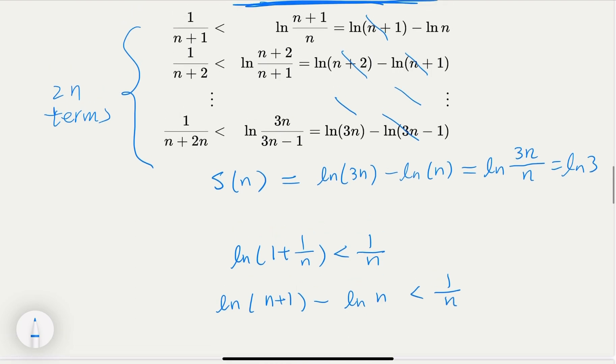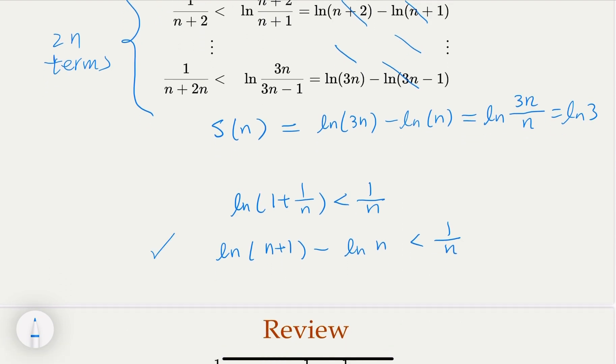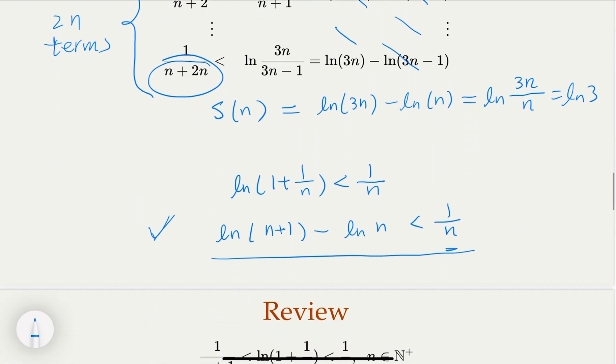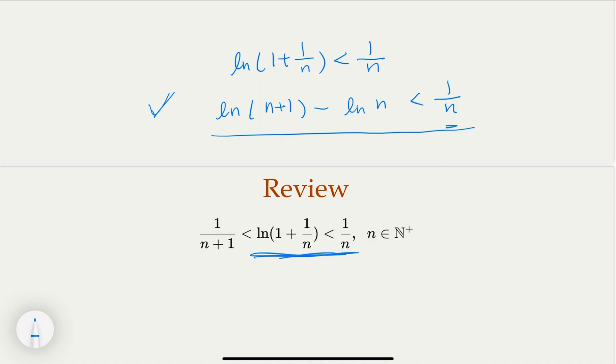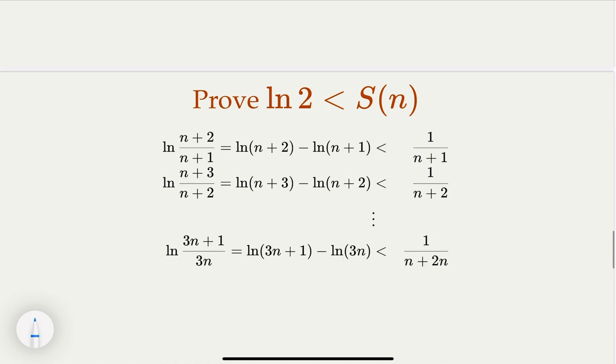But notice that the first term we need is n plus 1. So we're going to use this term, but we're going to start with n plus 1 here up to n plus 2n. So let's write that. Let's write this inequality, which is taken from the right-hand side of the previous inequality here. So this is directly resolved from the right-hand side of this. So we're going to use a similar strategy here, and this is total 2n terms. And here, this is S n. When you add it up, what you have is you cancel everything here. But what you're left with is this.